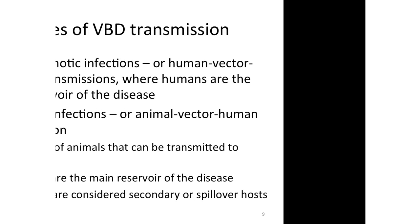So you have anthroponotic infections, which are human-to-human vector transmissions where human beings are the only reservoir. And you have zoonotic infections, which are diseases of animals transmitted between animal and animal, but where humans sometimes get into the life cycle. In these diseases there is an animal reservoir — the main source of infection is the animal, and humans are considered a secondary, spillover, or accidental host.